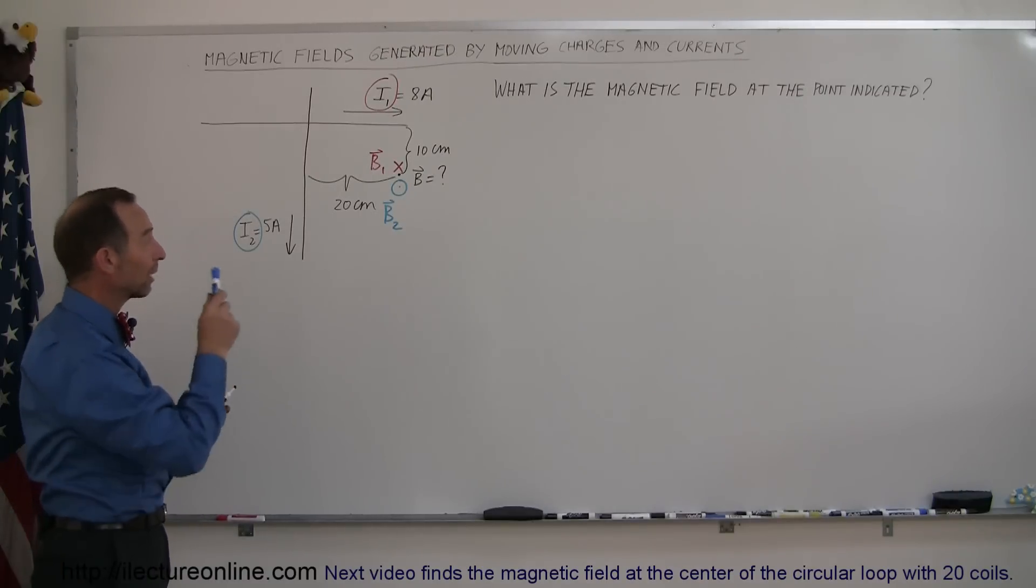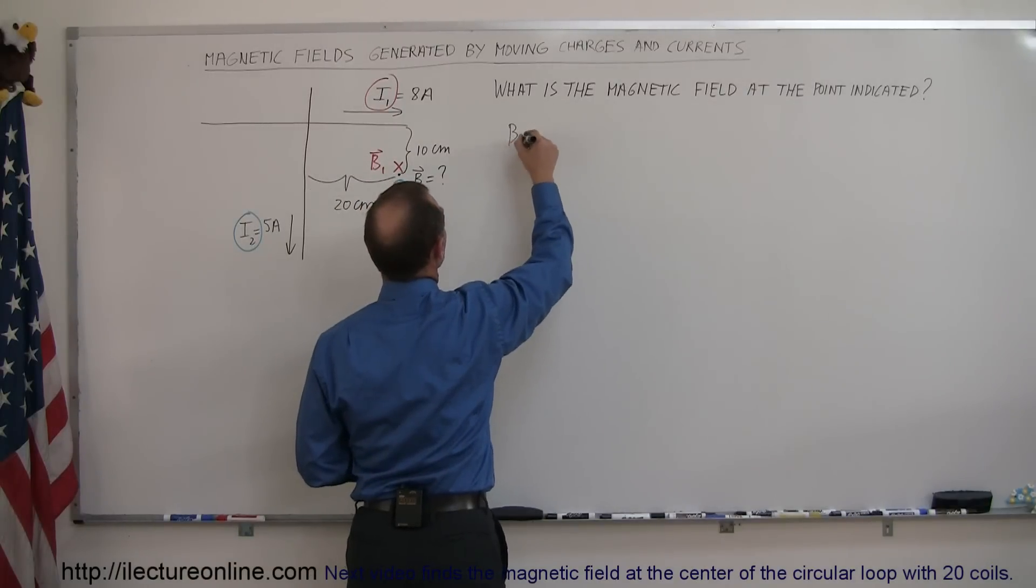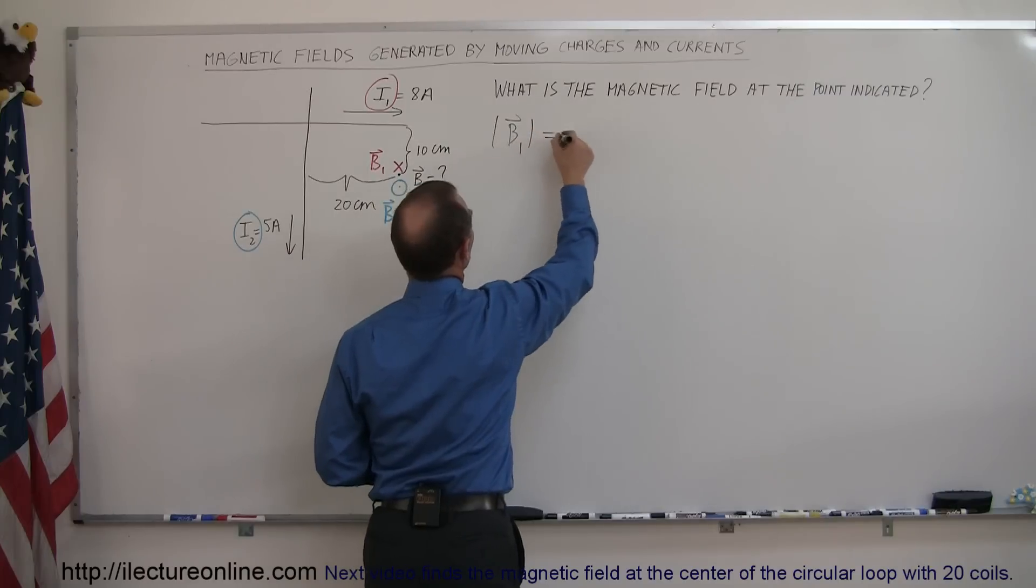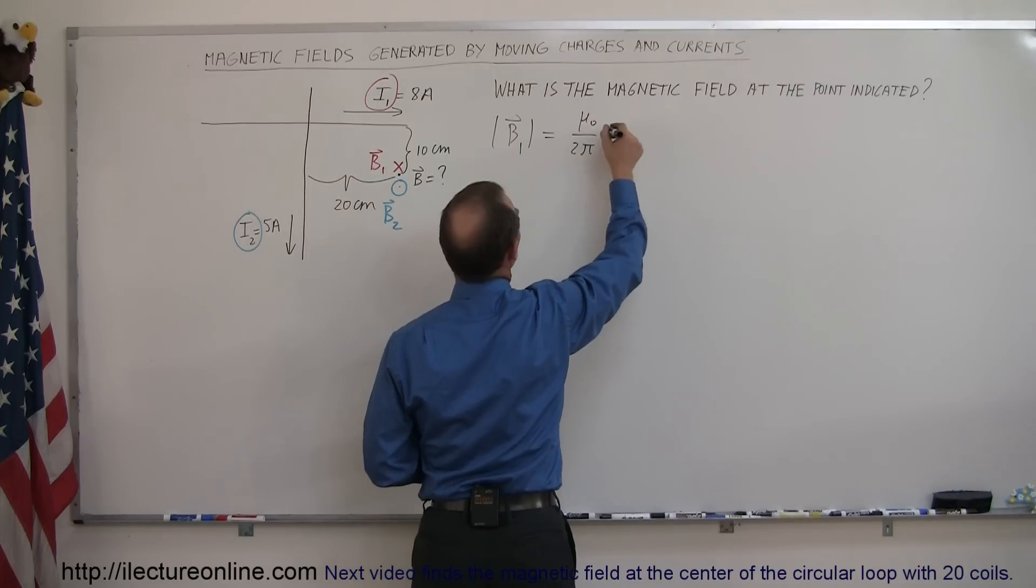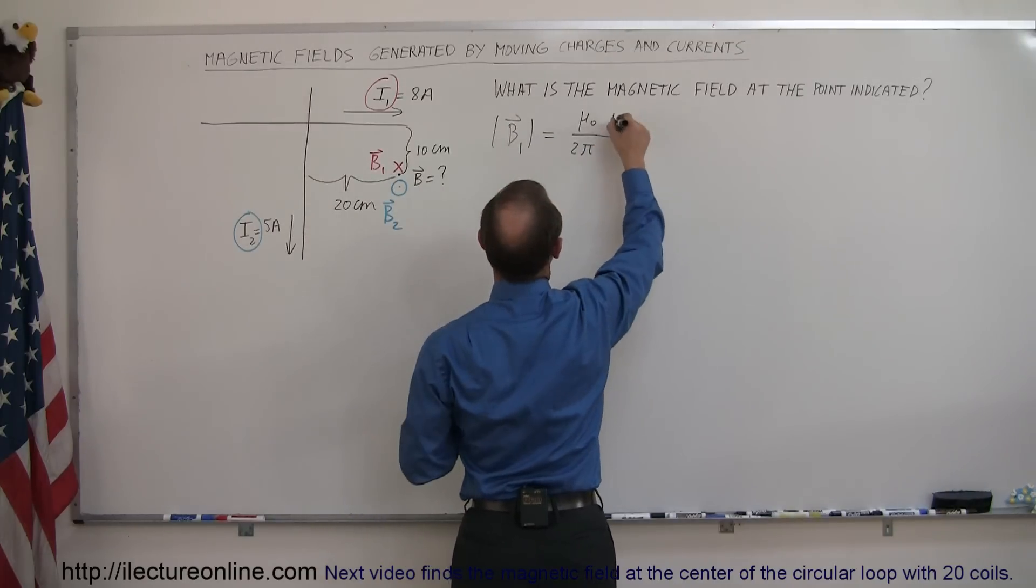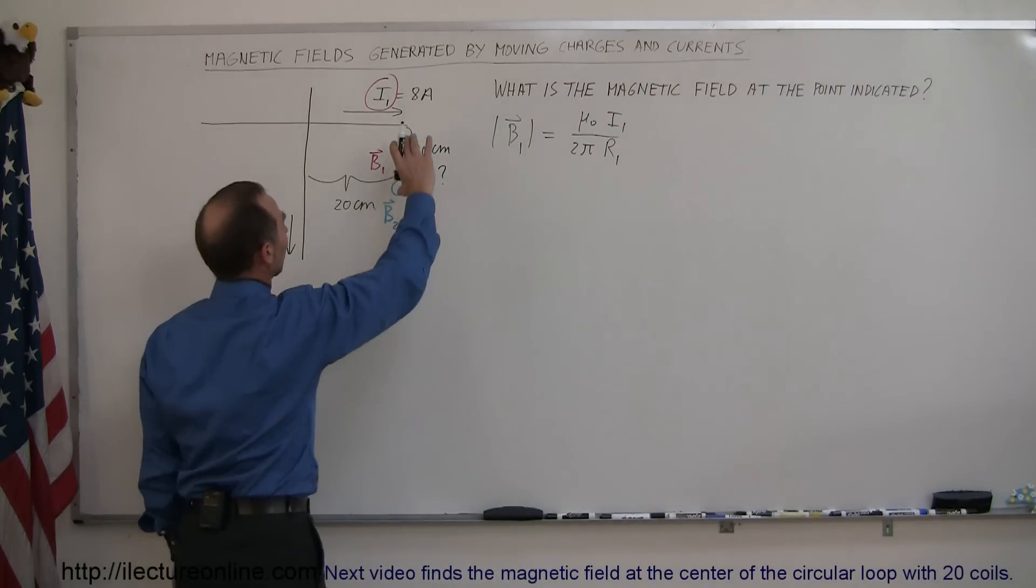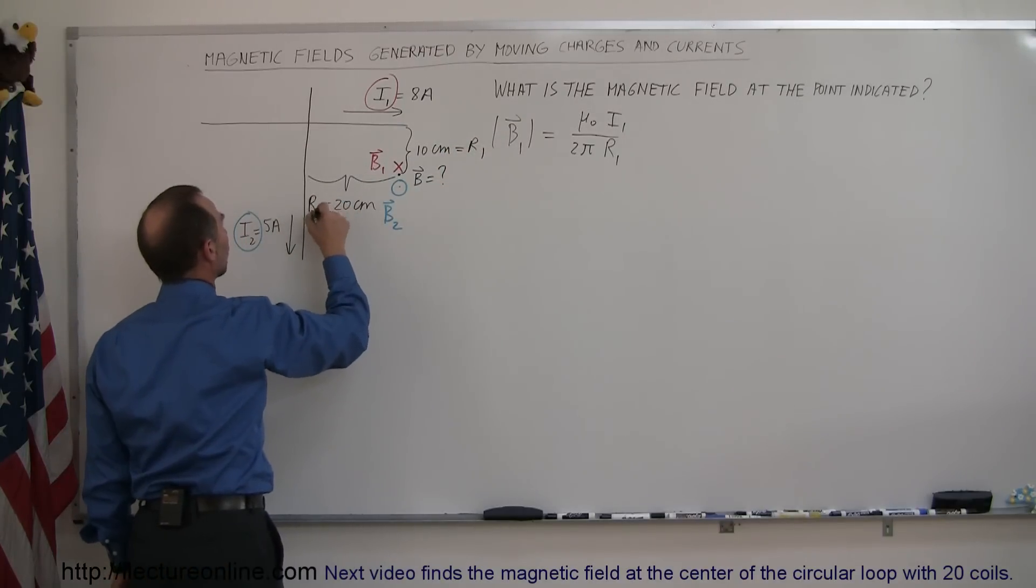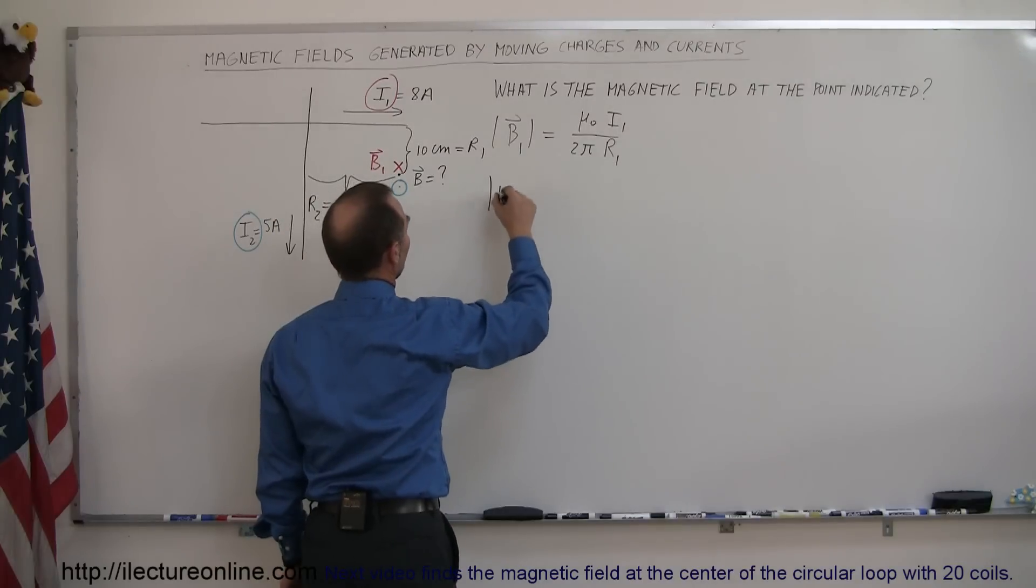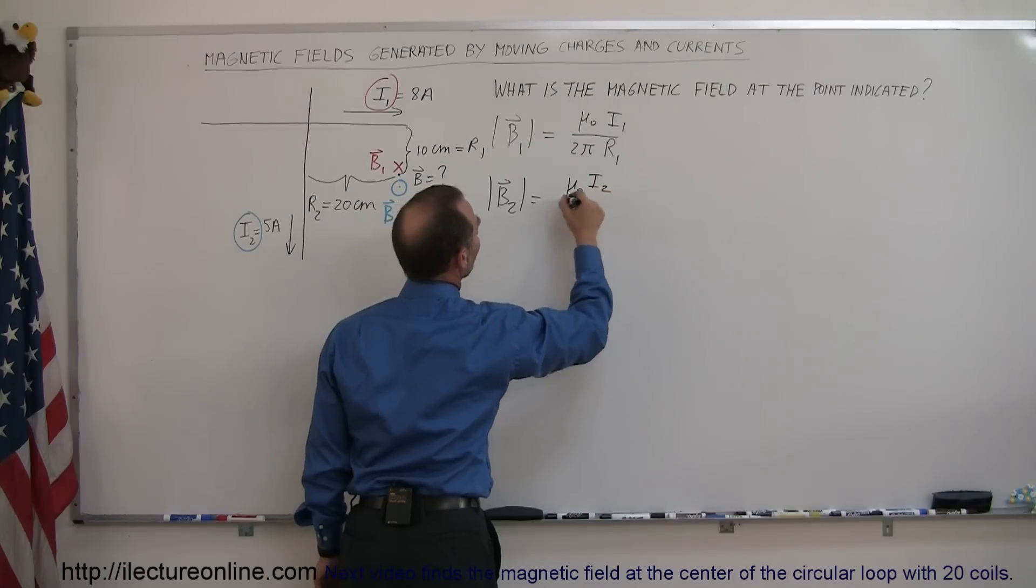And what we have to do now is find the magnitude of each of those and then add them together. So, magnitude of B1 is equal to mu sub nought divided by 2 pi times the strength of the current, which would be I1 divided by the distance away from that wire, which would be R1. Notice that R1 right here would be this distance here, so let's call this R1, and this here that would be called R2. For the second magnetic field, B2, we use the same equation, it's mu sub nought times I2 divided by 2 pi times R2.